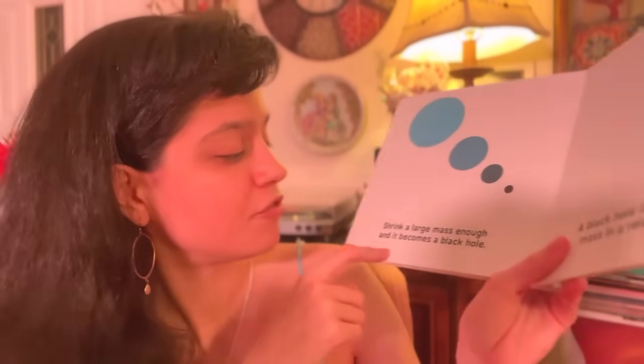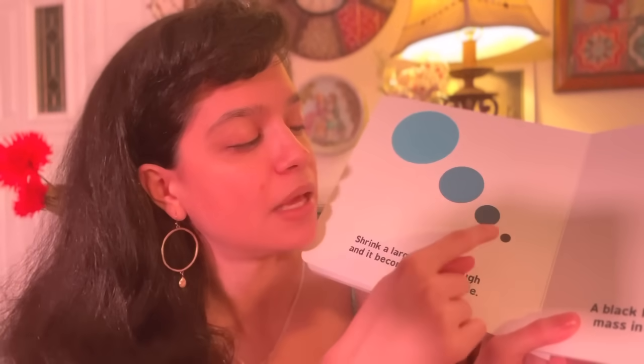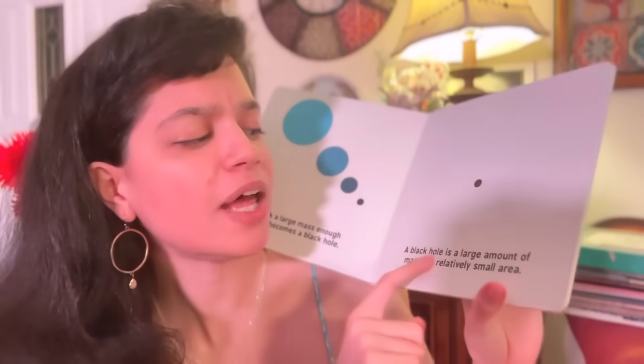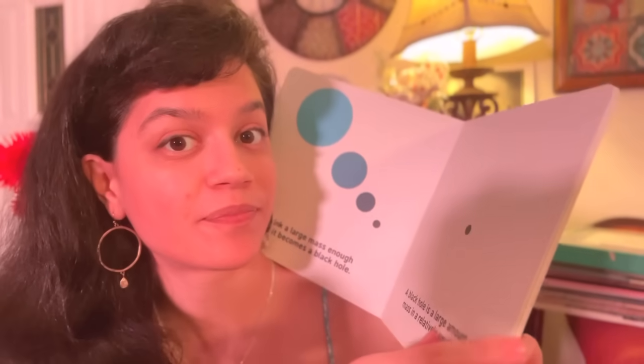Shrink a large mass enough and it becomes a black hole. When it goes into a black hole, it really starts to suction cup everything inside of it. A black hole is a large amount of mass in a relatively small area. A black hole has so much mass that not even light can escape its warp. So it's like if you were to go into a black hole and light a flashlight, not even the light particles of the flashlight could escape outside of the black hole — because it would be absorbed inside the mass.